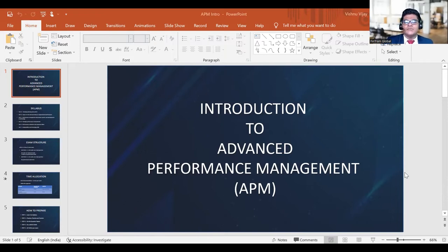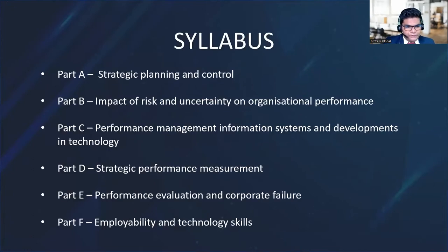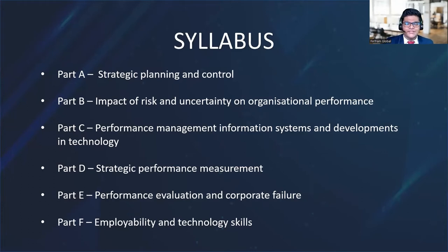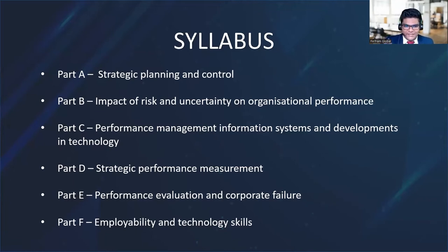When it comes to the APM paper, we have six syllabus areas. First, we have Part A — Strategic Planning and Control. This is something you've already learned in the SBL syllabus as well. It's all about the planning conducted by organizations, how they achieve their objectives, what strategies they have to implement to achieve those objectives, and various other models.